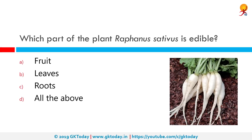Which part of the plant Raphanus sativus is edible? The correct answer is all of the above — the plant's fruits, leaves, and roots are all edible. Raphanus sativus is basically radish; the primary edible parts are the roots, but radish leaves and seed pods, which are the fruits, are also edible.